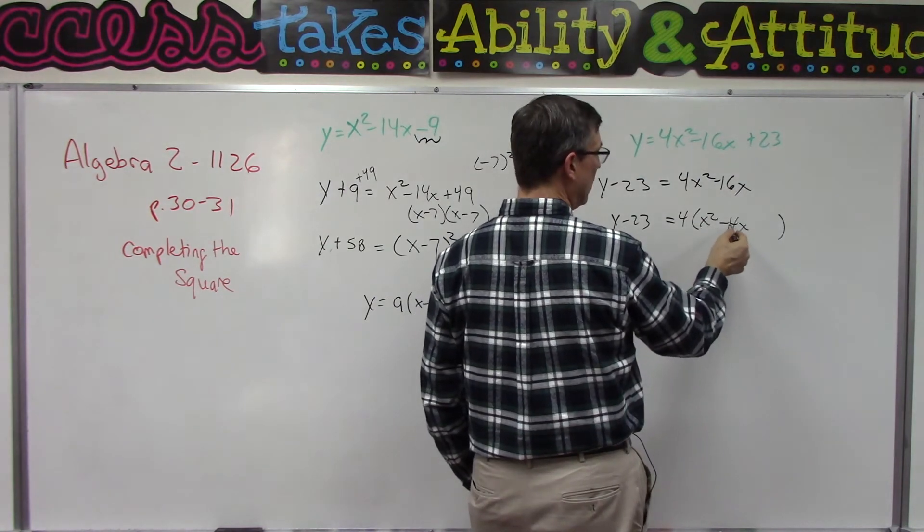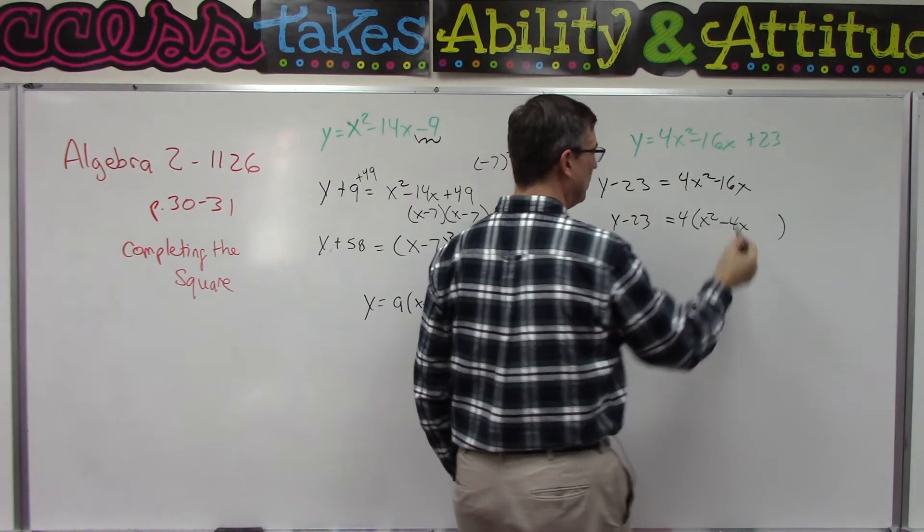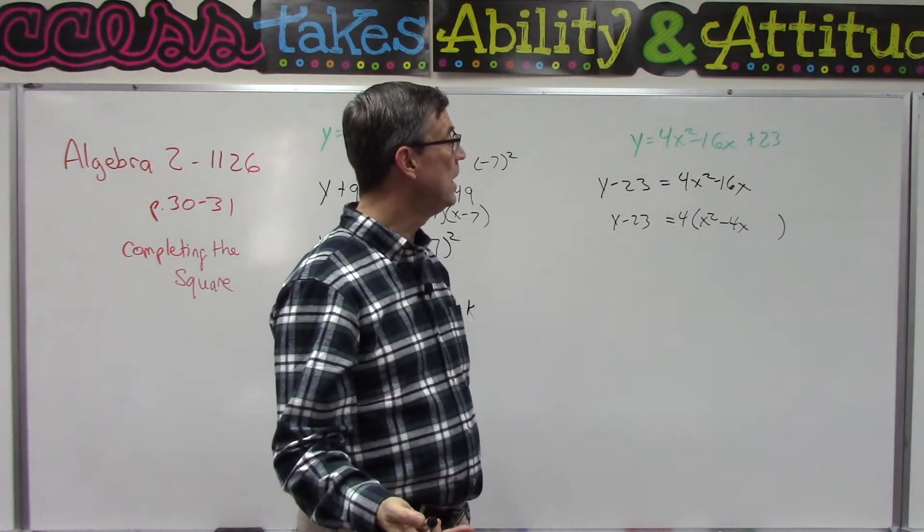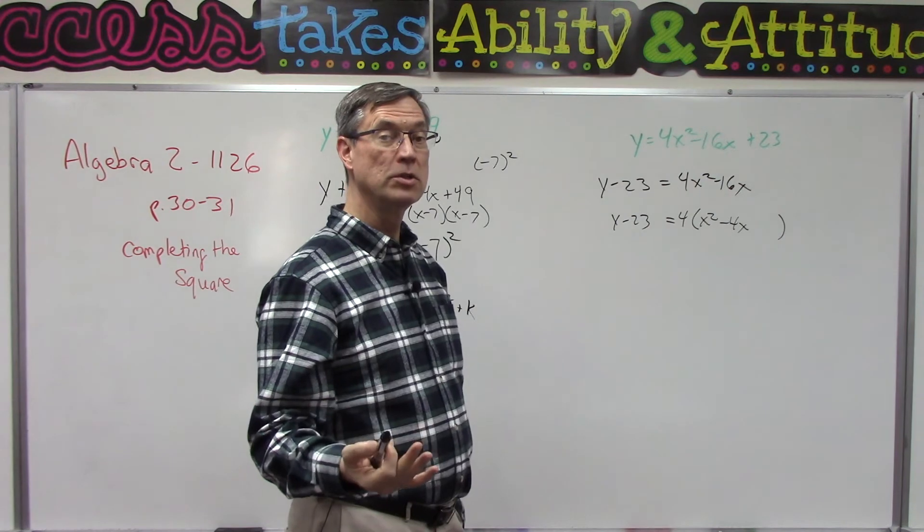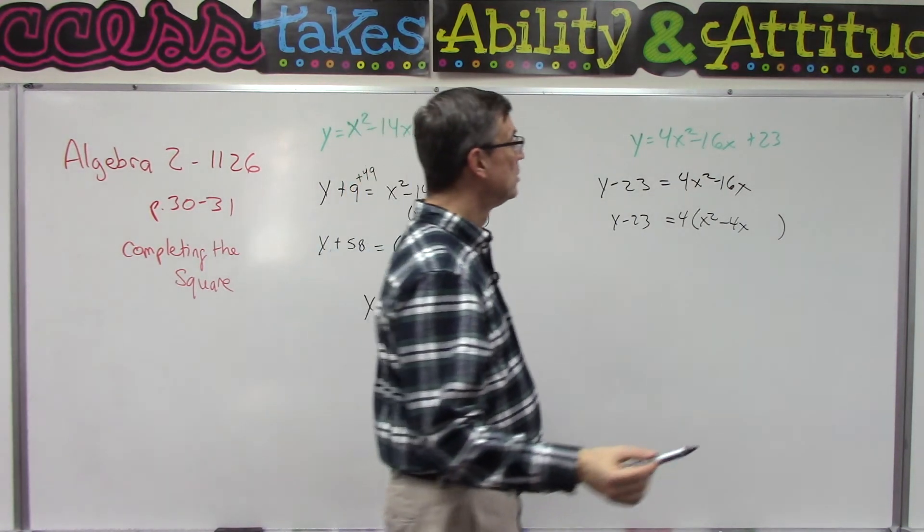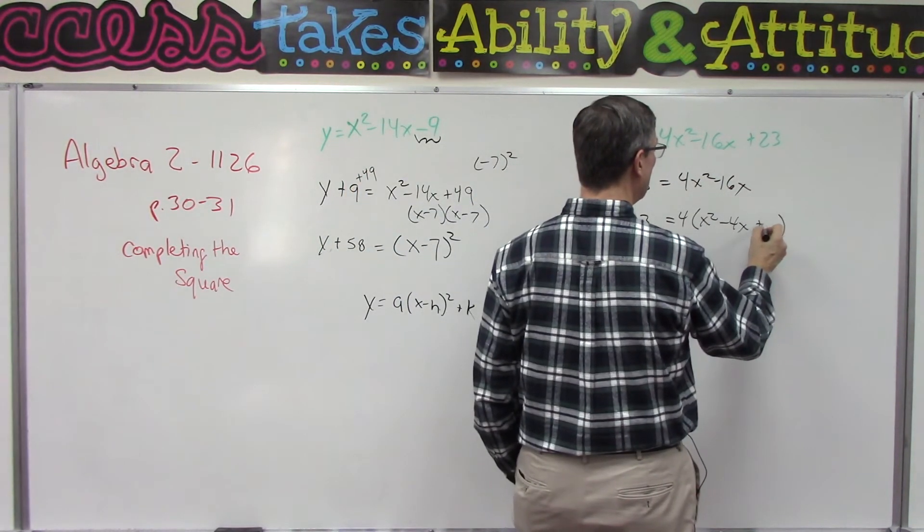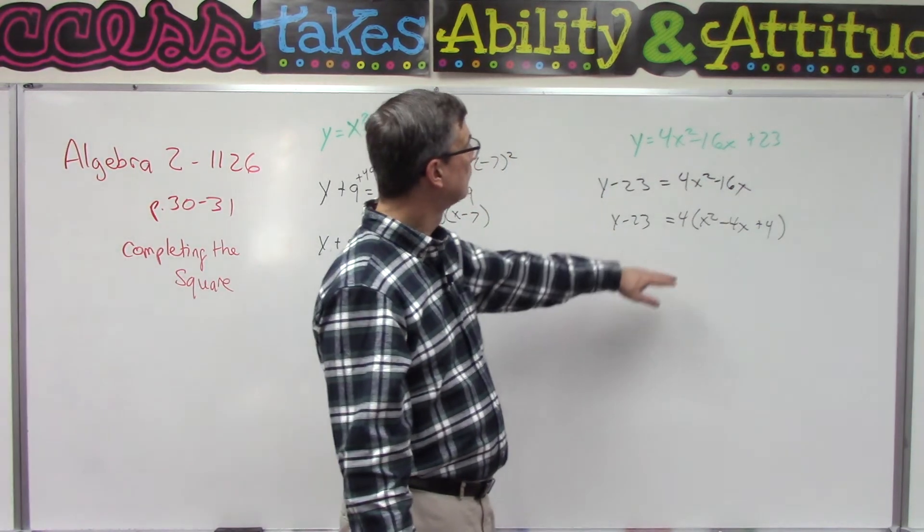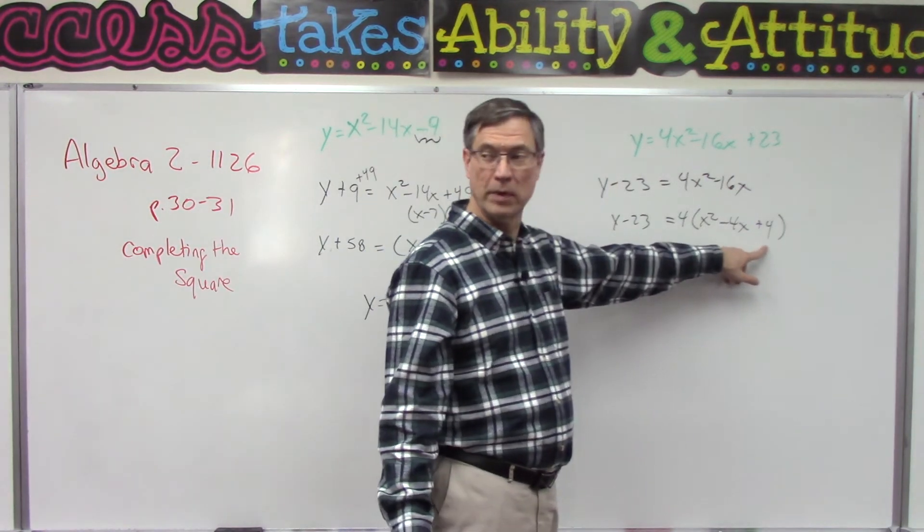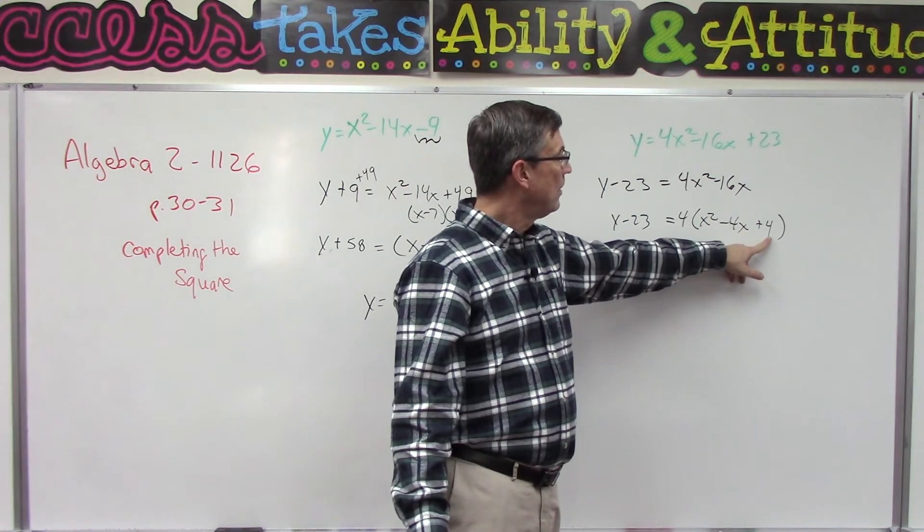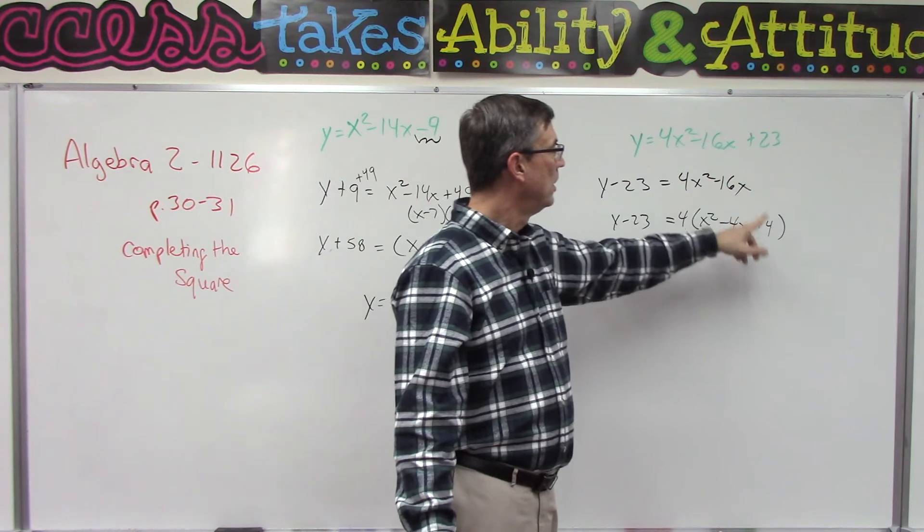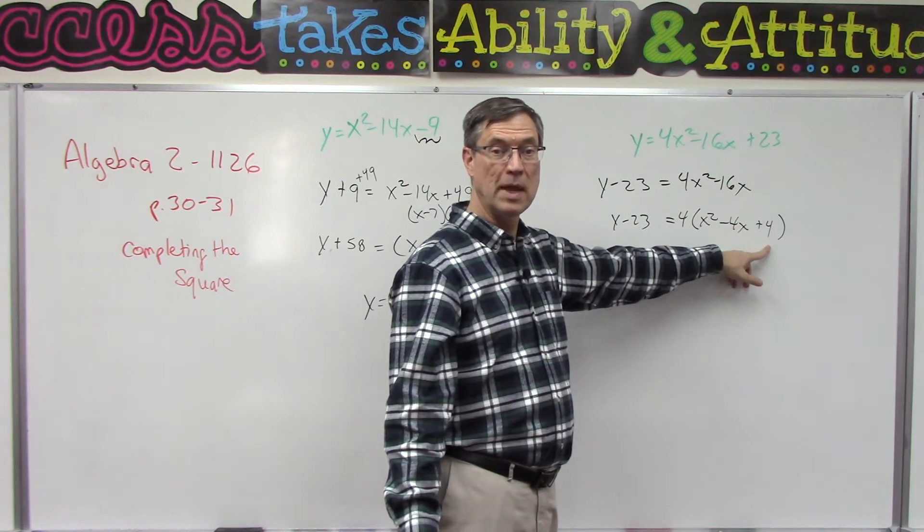Now, what is half of this middle term? What's half of negative 4? So you should have got negative 2 in your head, and then you're going to square that, and so you get 4. Correct. So we're adding 4 over here. But think about it: what did we really add over here? Even though I have a 4 here, on this side of the equation I added 4 times 4, so I added 16.